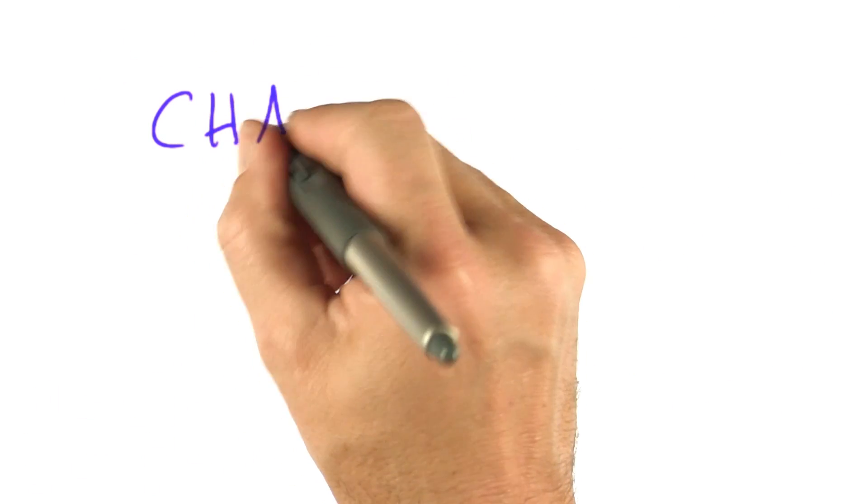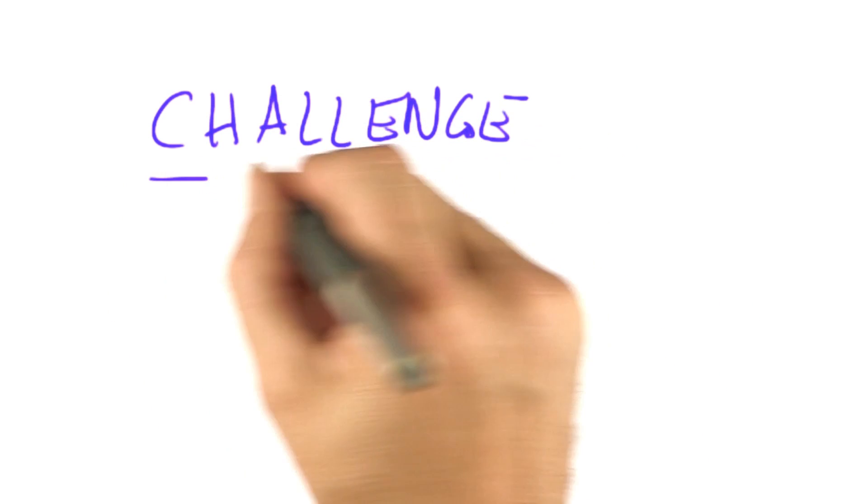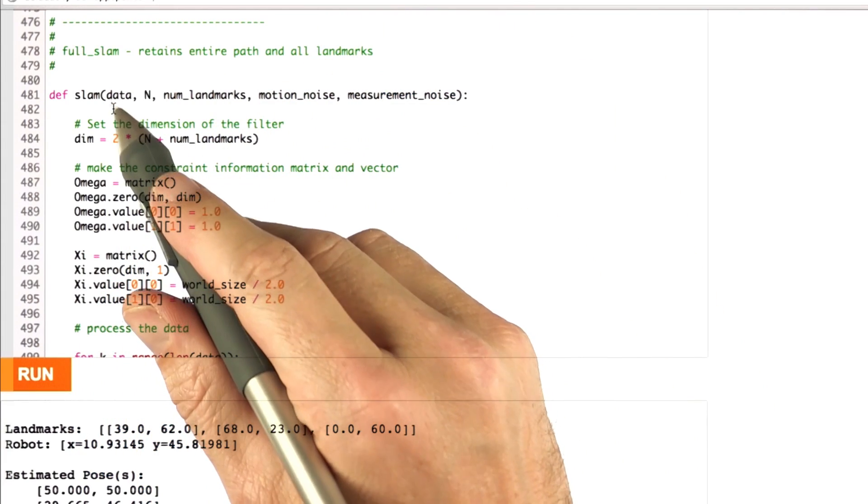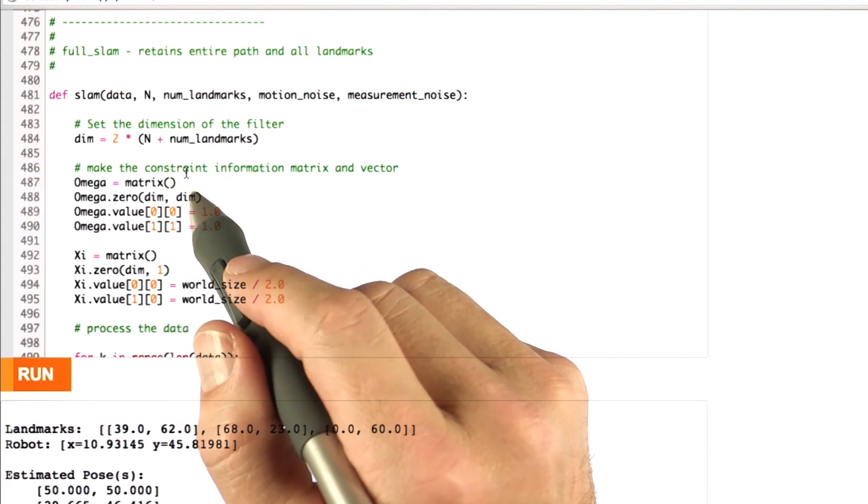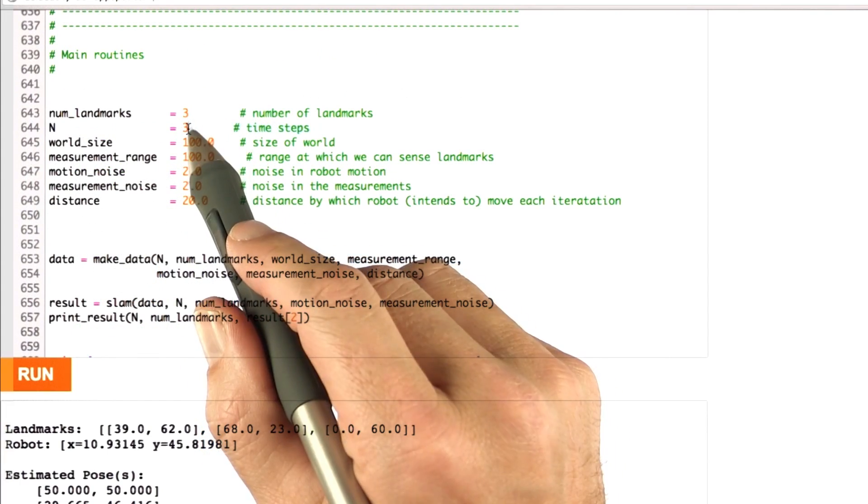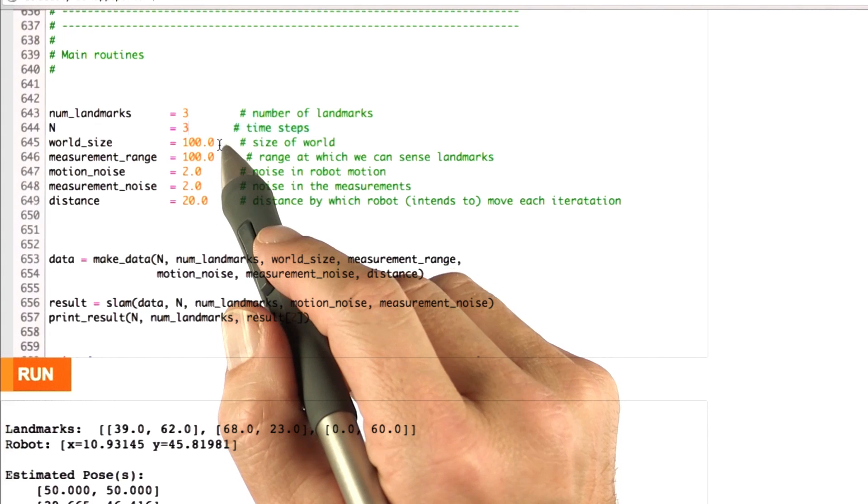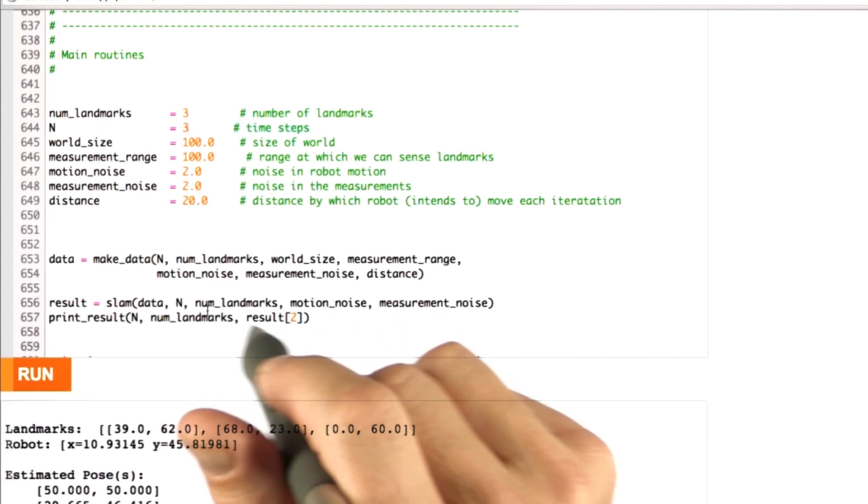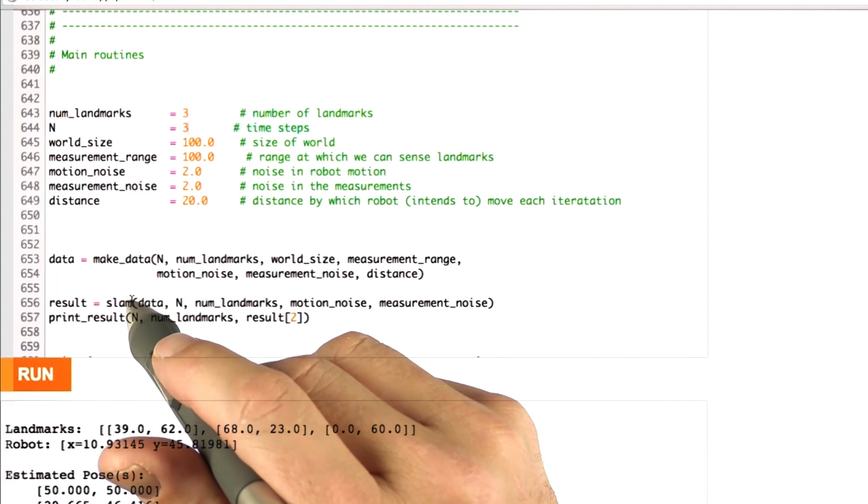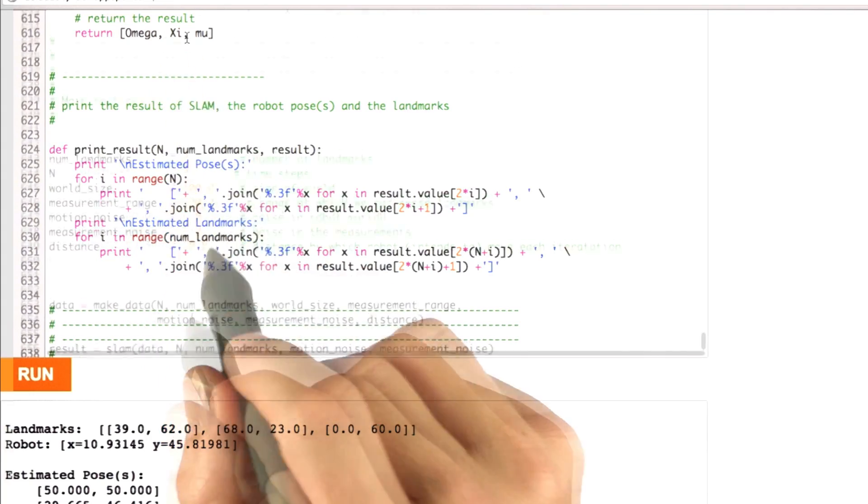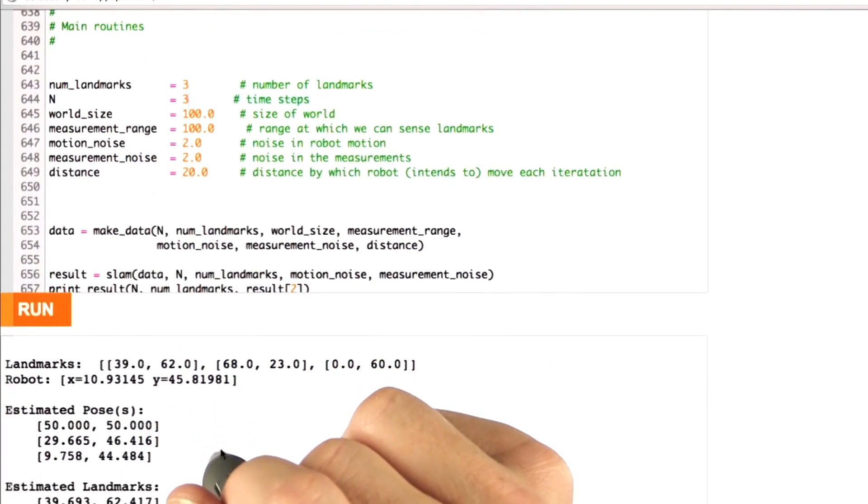So you ask for a challenging programming assignment. I promise you you'll be busy with it for a while. I'm giving you now my piece of code in which I implemented slam for you. You're familiar with this. You have all of that. And then I run slam with three landmarks, three time steps, a world size of 100, and a measurement range of 100. I make data at random, as you're familiar with, and I compute the result. And the result in this case contains a vector of omega, xi, and mu concatenated.